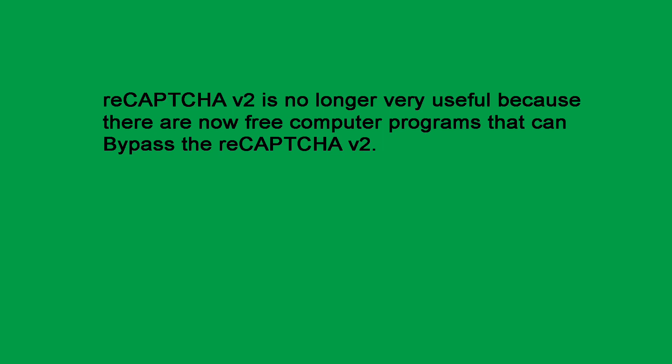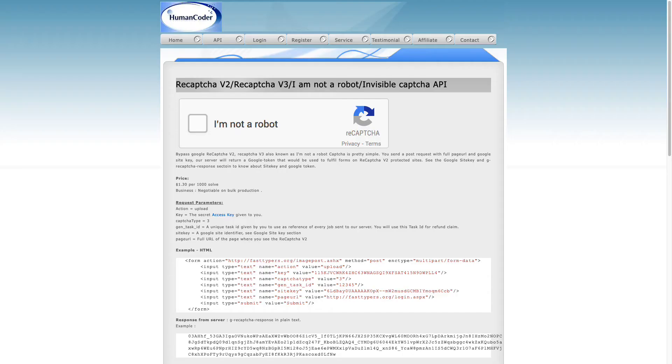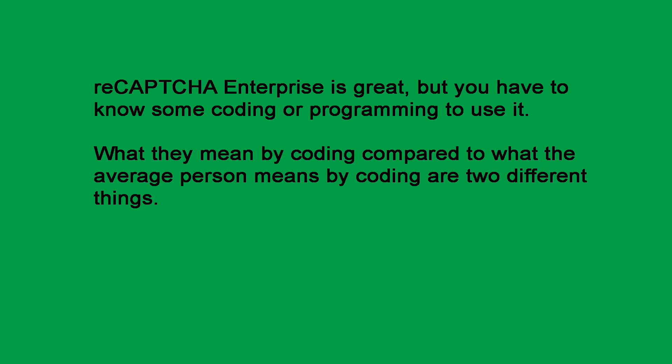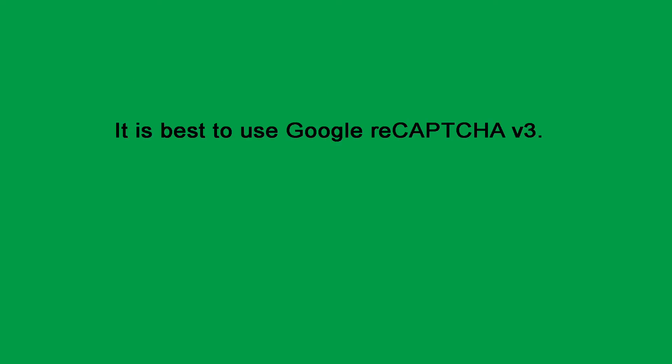ReCAPTCHA v2 is no longer very useful, because there are now free computer programs that can bypass it. For example, if you go to a certain website and pay a small fee, you will be able to bypass over 1,000 ReCAPTCHA v2 challenges. ReCAPTCHA Enterprise is great, but you have to know some coding or programming to use it — and what they mean by coding compared to what the average person means are two different things. Therefore, if you want to use Google ReCAPTCHA, it is best to use Google ReCAPTCHA v3.